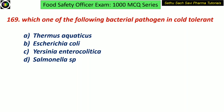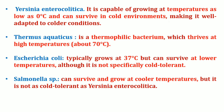Which of the following bacterial pathogens is cold tolerant? Is it Thermus aquaticus, Escherichia coli, Yersinia enterocolitica, or Salmonella species? Yes, it is Yersinia enterocolitica. It is capable of growing at temperatures as low as 0°C and can survive in cold environments, making it adaptable to polar conditions. Thermus aquaticus is a thermophilic bacteria that mainly thrives at higher temperatures, nearly 70°C. E. coli mainly grows at 37°C but can survive at lower temperatures, though it is not specifically cold tolerant. Salmonella species can survive and grow at cooler temperatures but is not as cold tolerant as Yersinia enterocolitica.